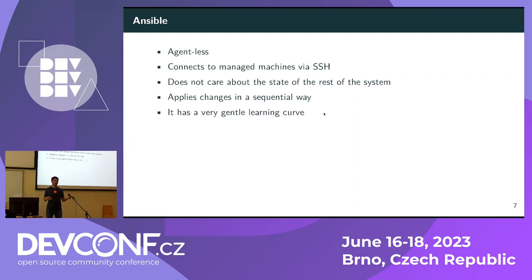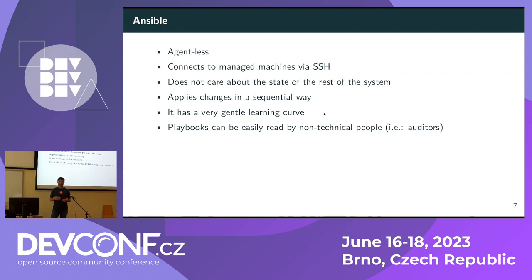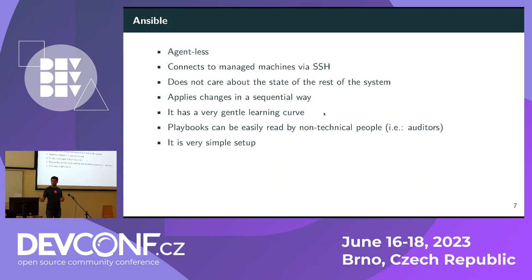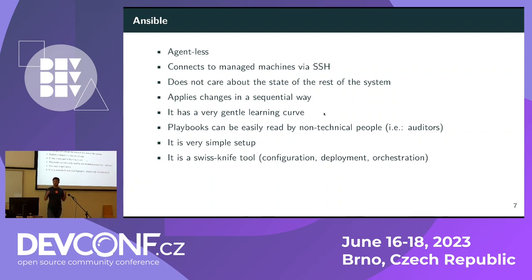Ansible has a very gentle learning curve. YAML is fairly straightforward — I would argue Ansible is not configuration as code, it is configuration as data, because I wouldn't define YAML as code. Ansible playbooks can be easily read by even non-technical people, like auditors. We were in a PCI DSS environment with auditors every three to six months, and being able to show them exactly what you're doing can help. It's also very simple to set up. And a deciding factor was that it's a Swiss knife tool — you can use it to provision new systems, for deployment, for configuration, for whatever you want.